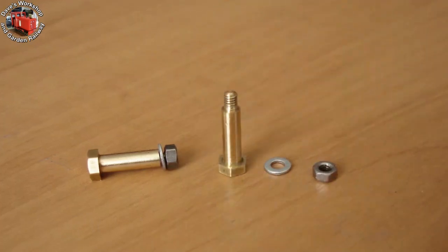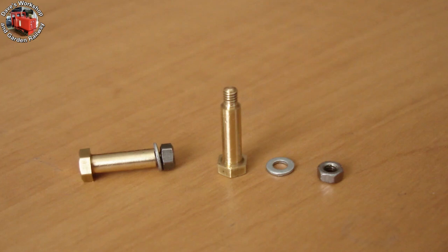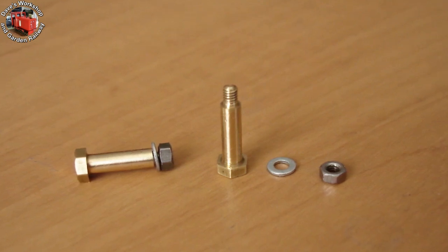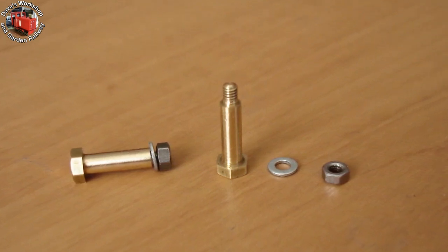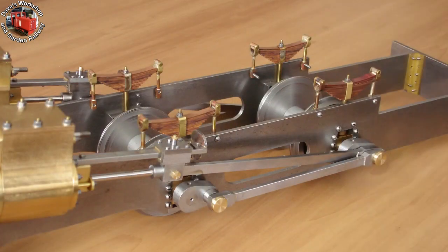Two crosshead pins were turned from 3/16ths AF brass hex rod, 1/8th diameter, and threaded 8BA on the end with a button die in the tailstock. Thanks for watching.